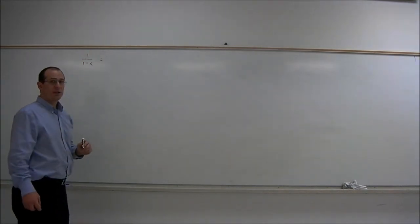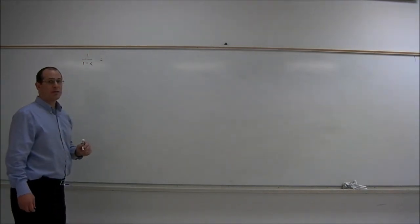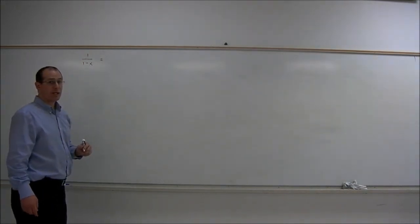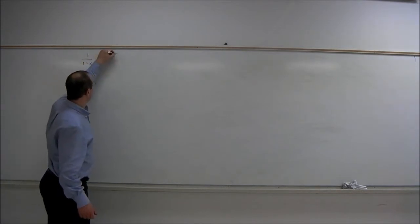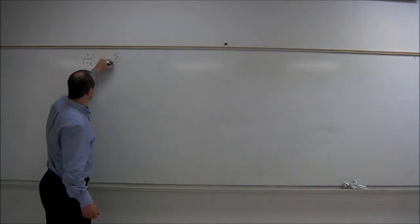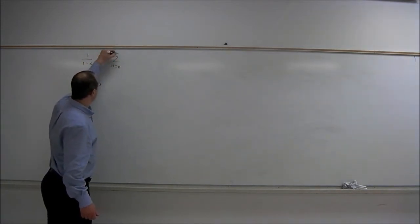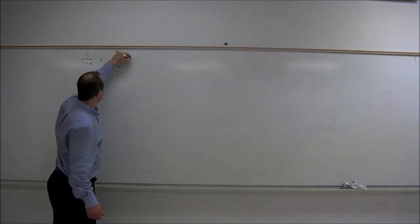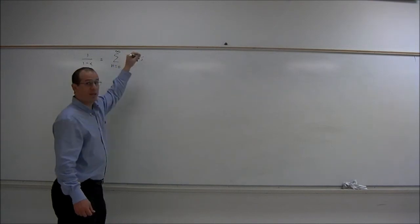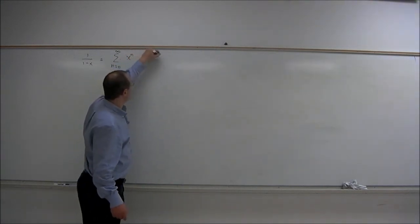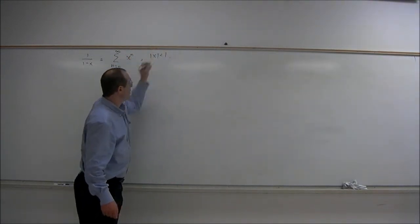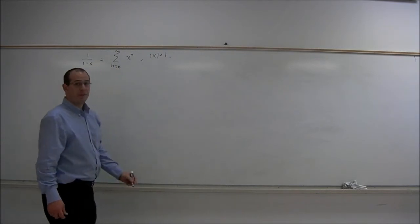We'll begin with the power series representation for the function 1 over 1 minus x. That would be the summation n equals 0 to infinity of x to the n. This power series is valid as long as the absolute value of x is less than 1.